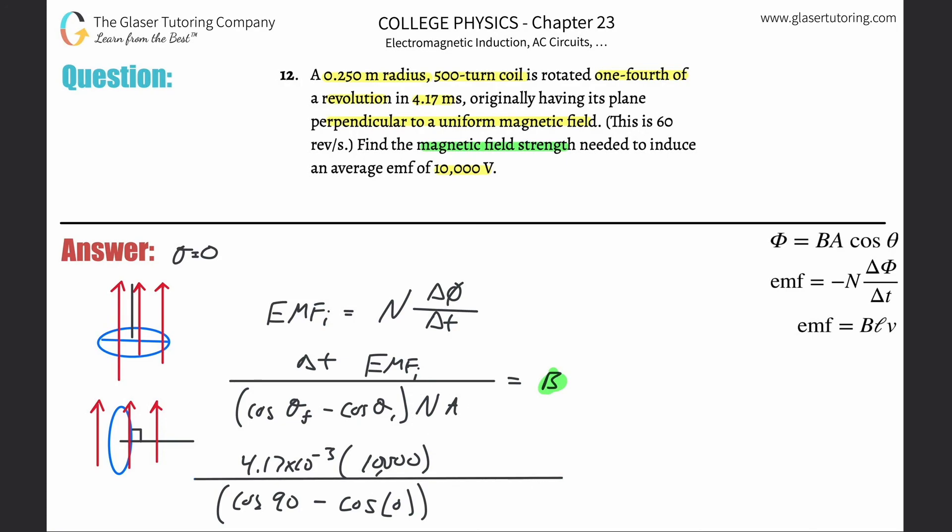Times the number of turns - how many turns did they say? 500 times the area. Here they gave us the radius. So this is going to be pi times that radius squared so 0.25 squared. And that's equal to the magnetic field. Now this one will come out negative, just take the absolute value, we're just concerned about the magnitude.